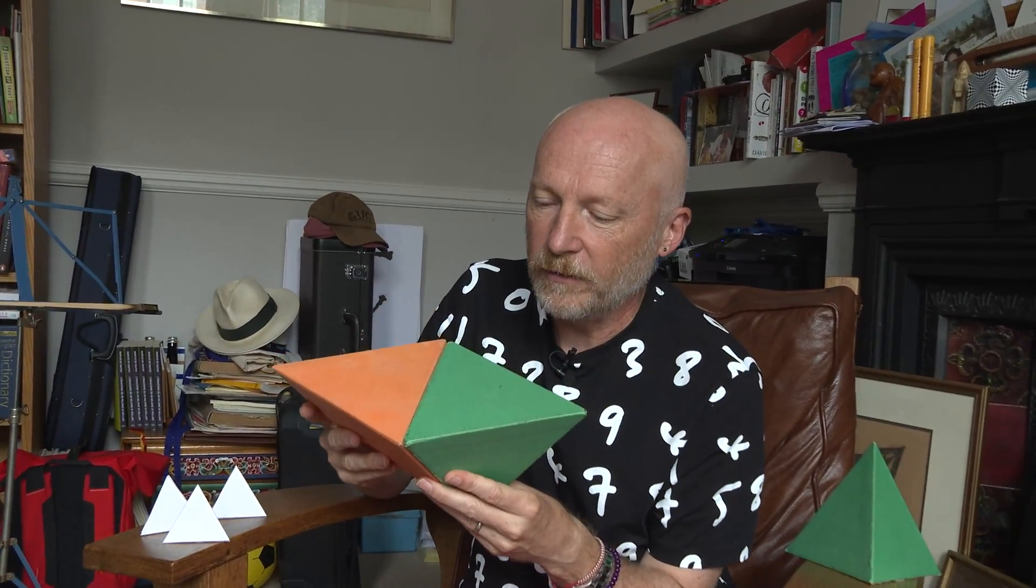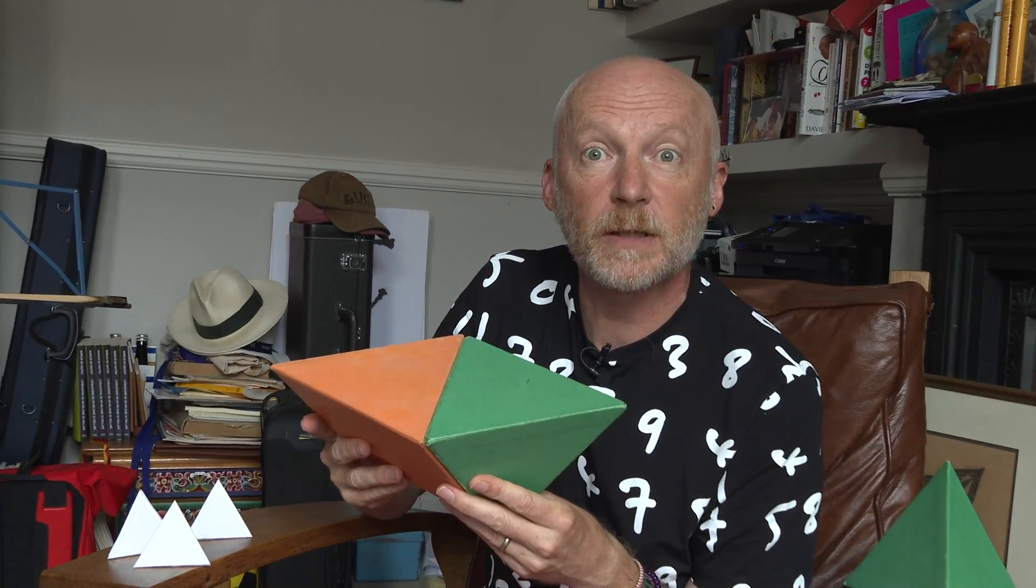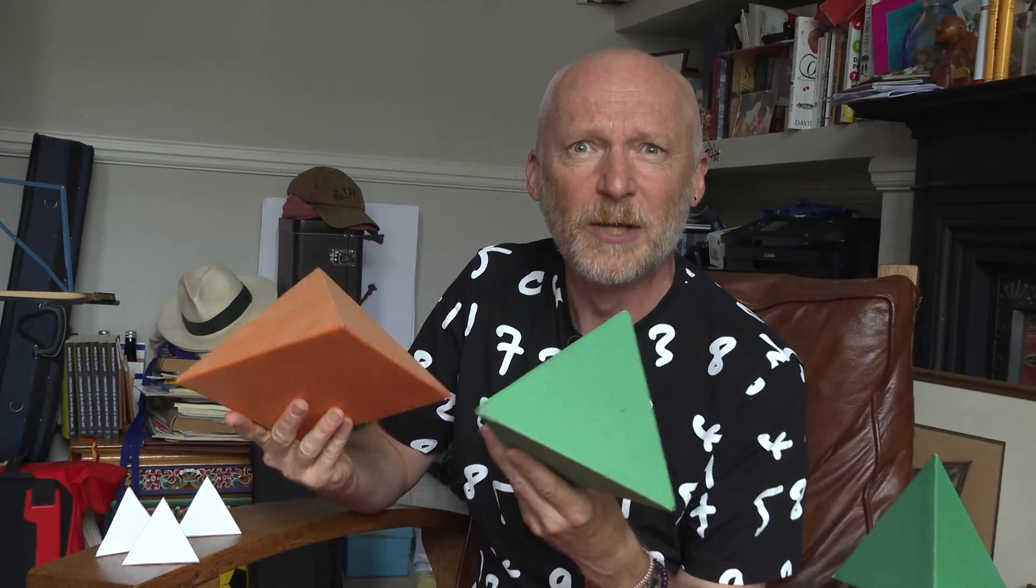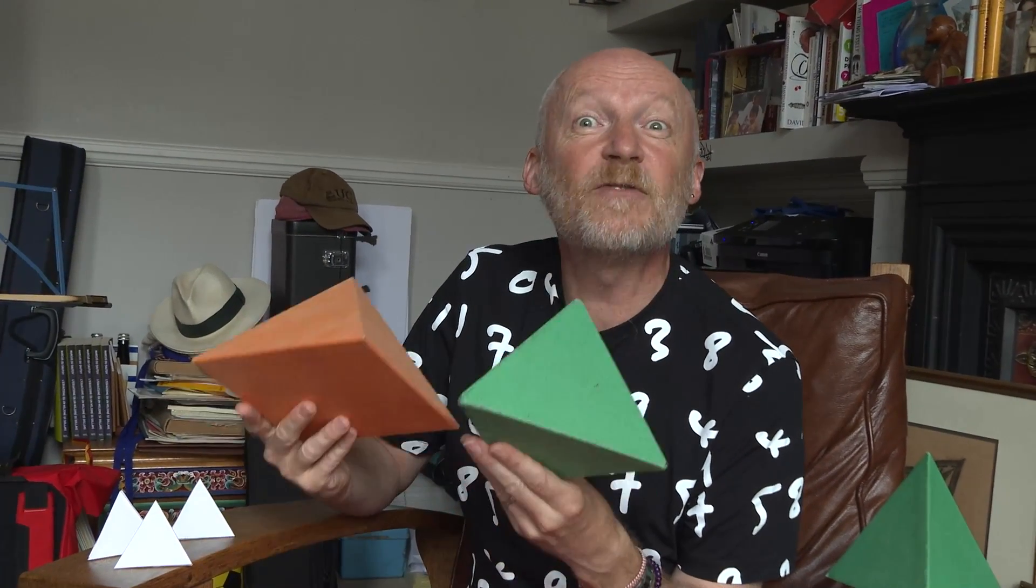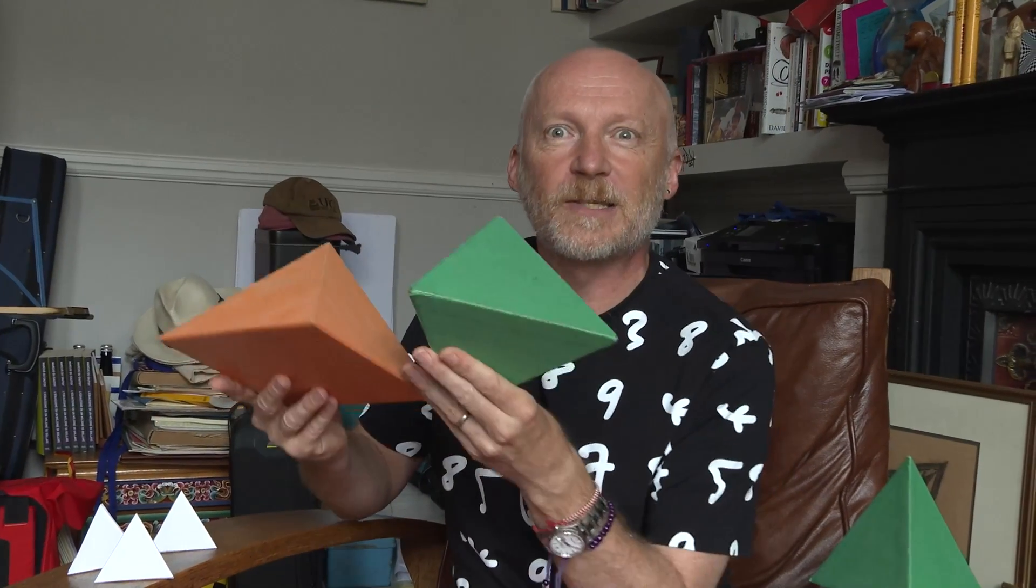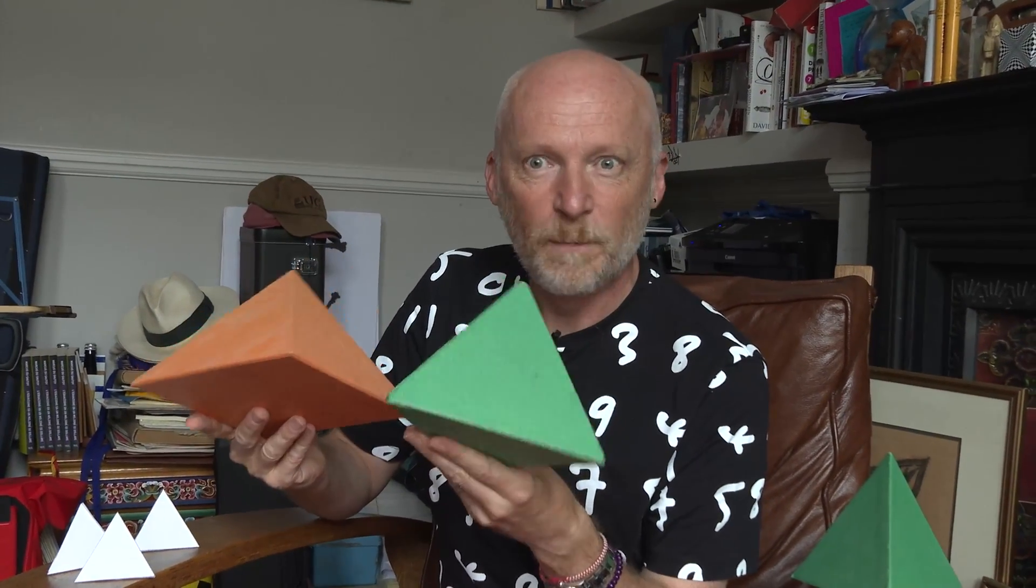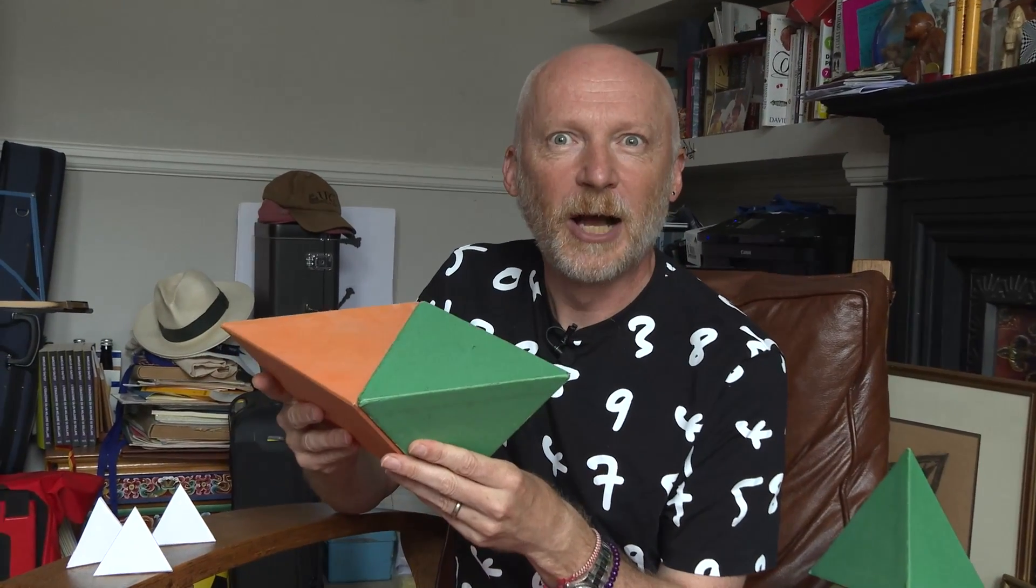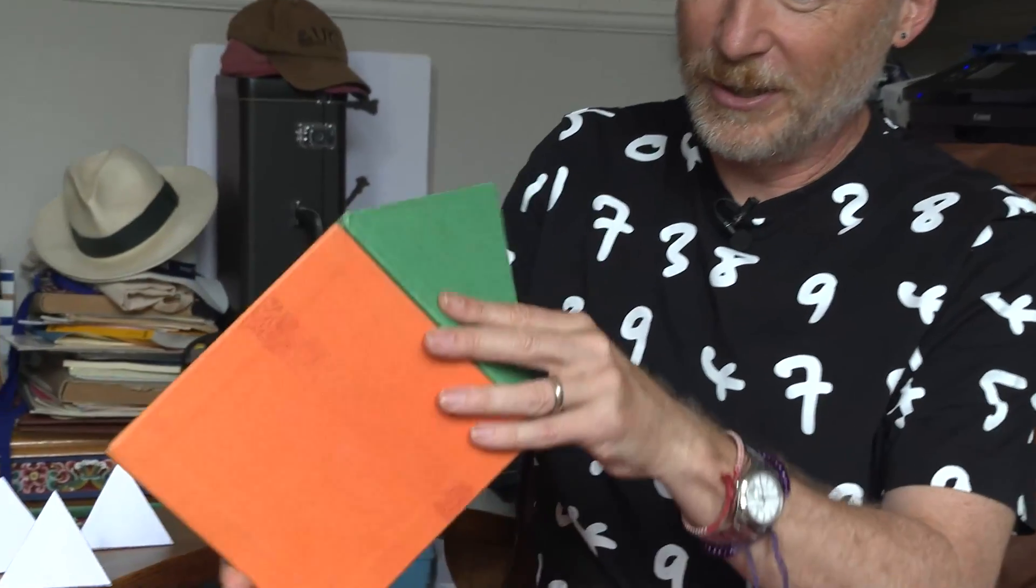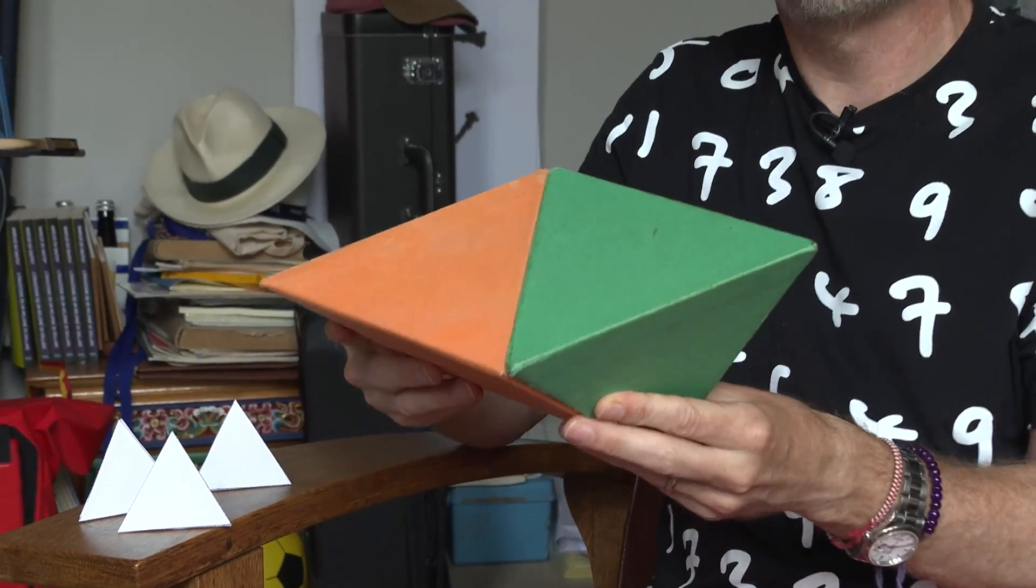And what's curious about this is this was set in one of the SAT exams in America, just to see how good you are at conceptual visualization. And they didn't realize that this kind of rather curious answer. So the people who said seven got the score and those who said five were given no marks at all.